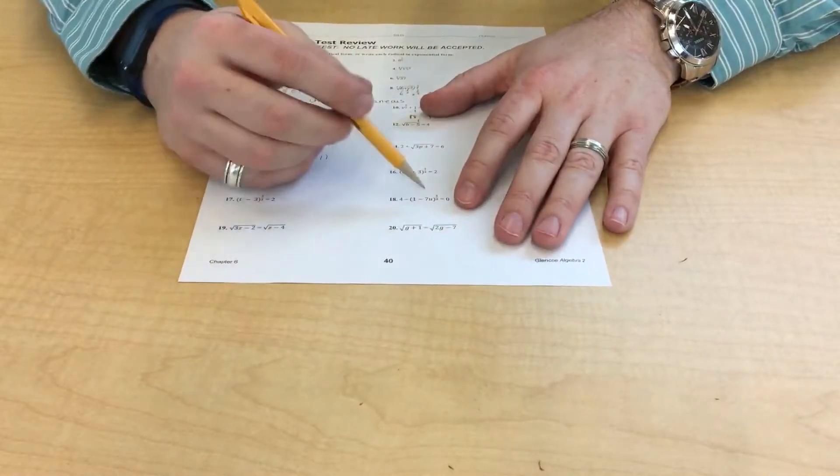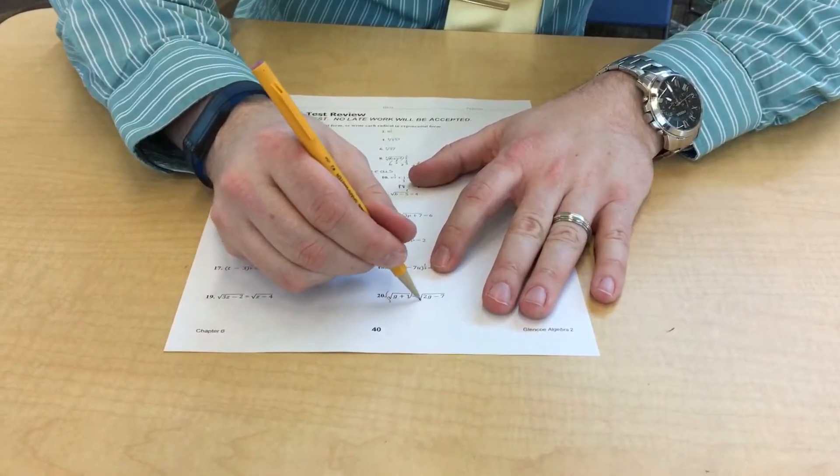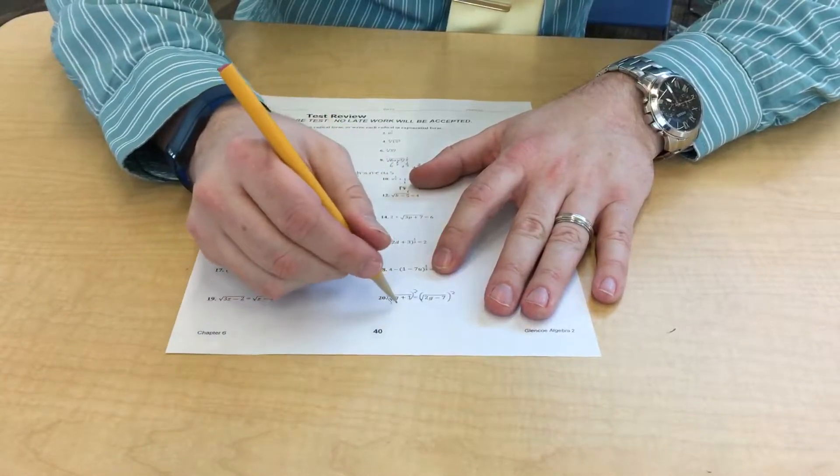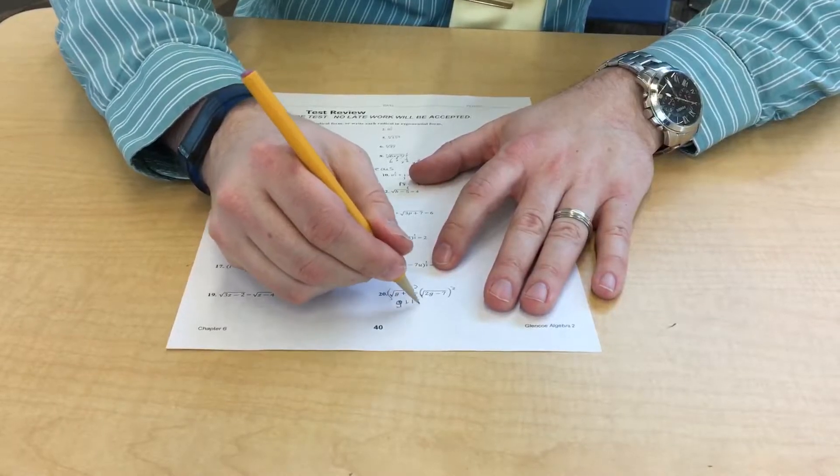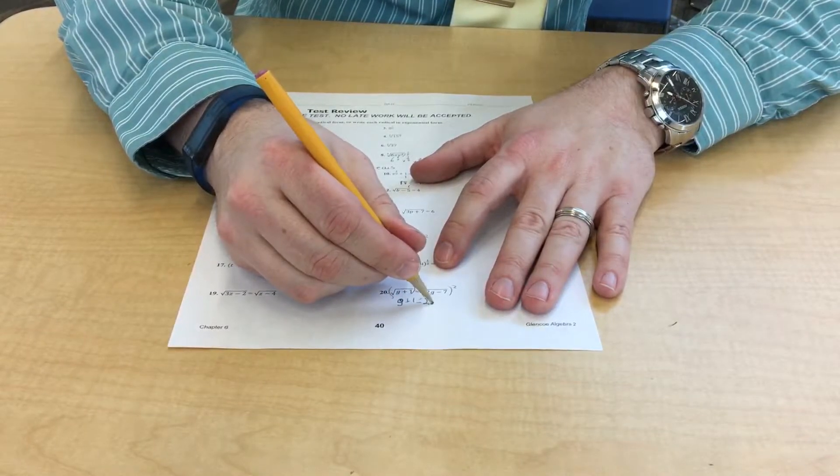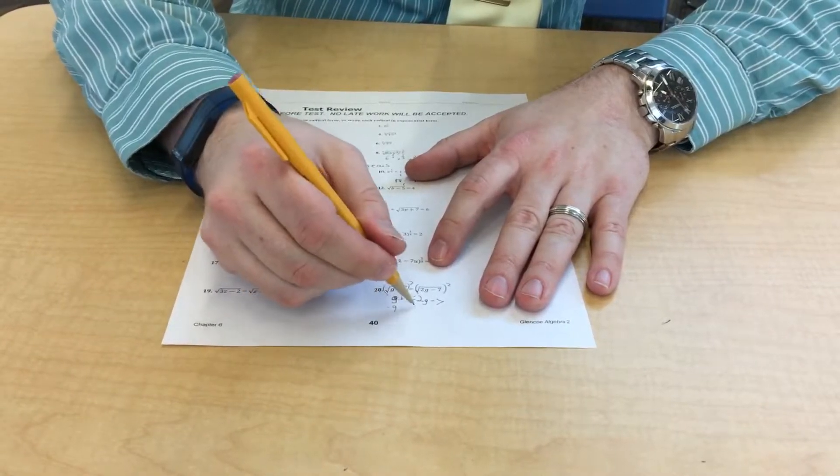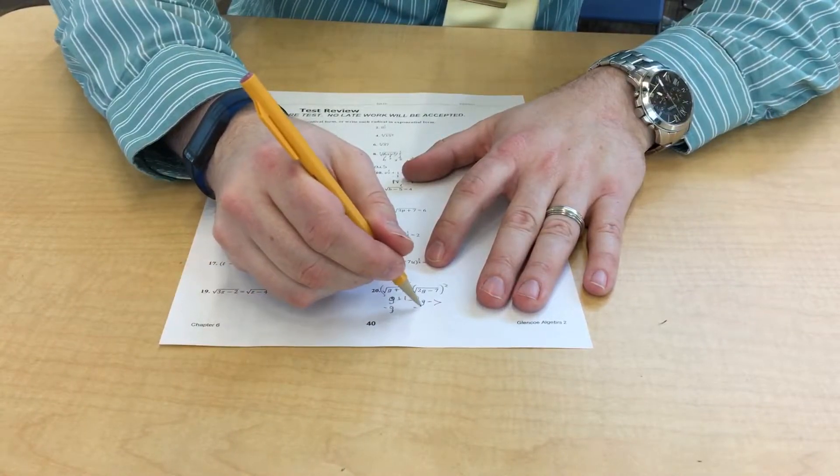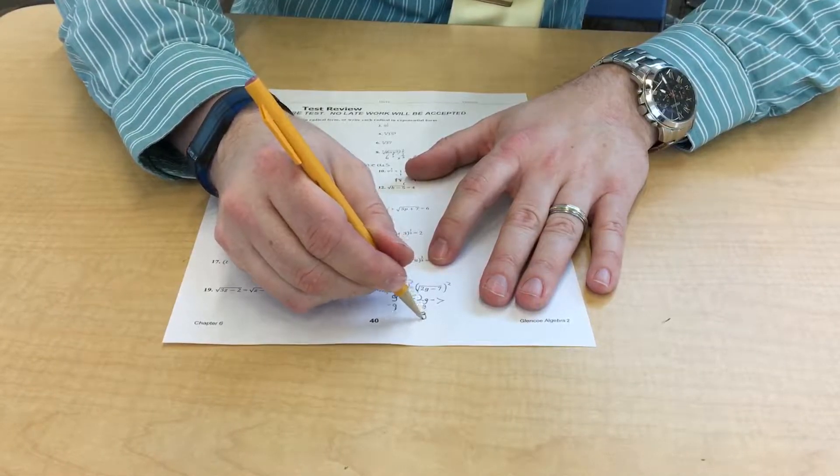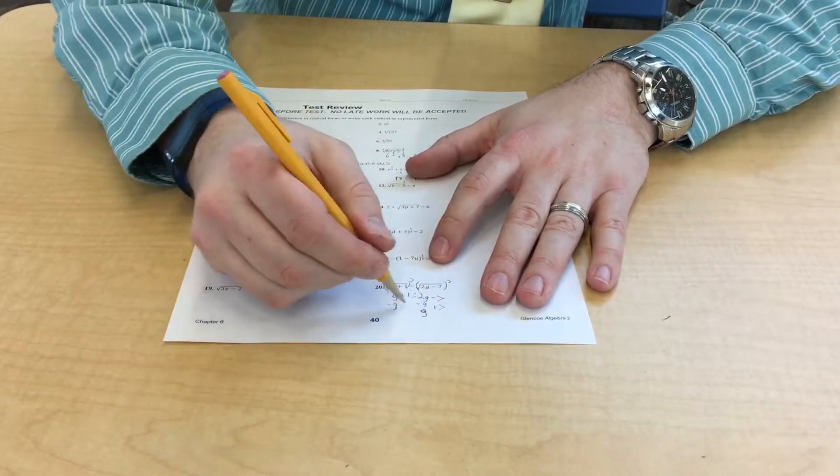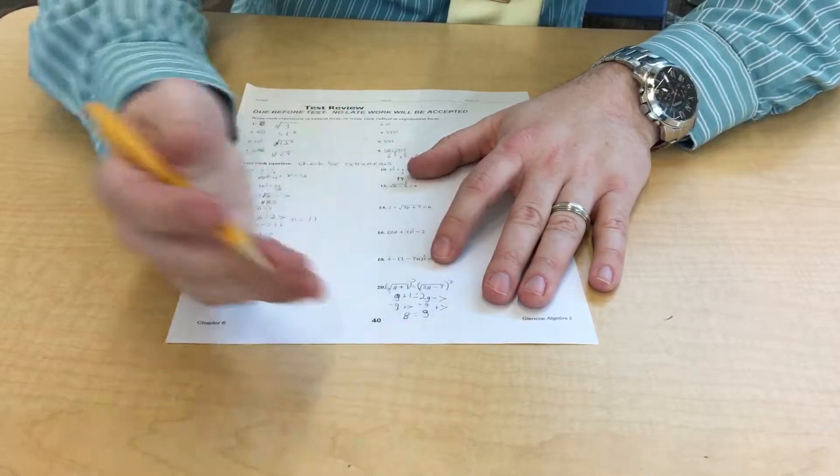Down here at the bottom where there's a square root on both sides of it, you take this and you square it. You take this and you square it. And it's going back to algebra 1. G plus 1 equals 2G minus 7. You subtract G. You get G over here. And then you add 7. You add 7. And you get equals 8. So G is 8.